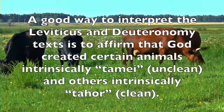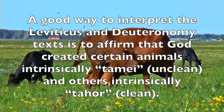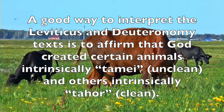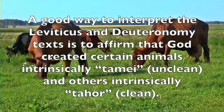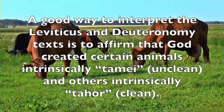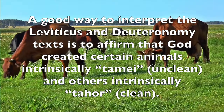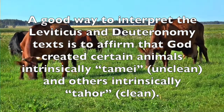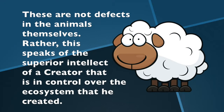A good way to interpret these passages is to affirm that God created certain animals intrinsically tamay — that is, unclean — and others intrinsically tahor — that is, clean. These terms are not defects in the animals themselves; rather, they speak of the design God used when he created animals.